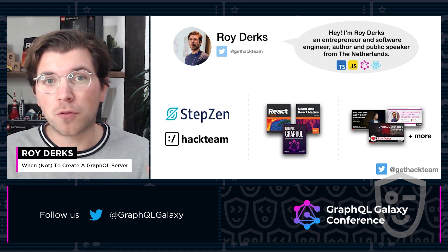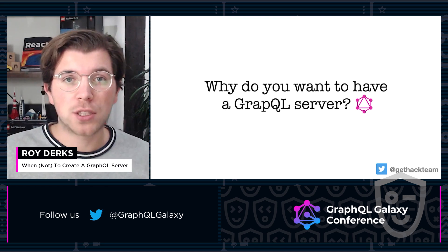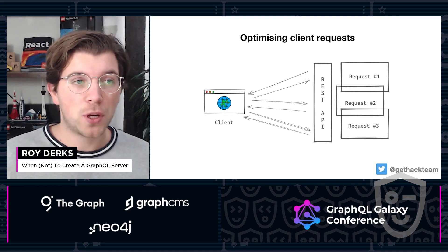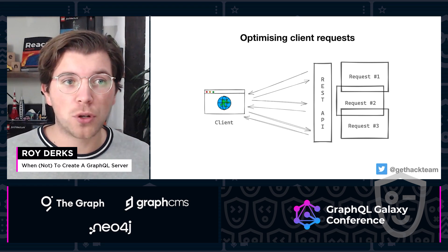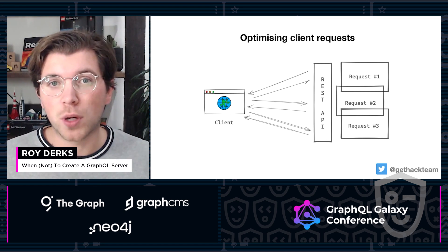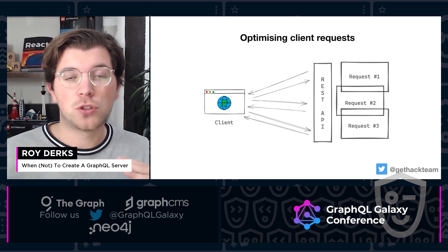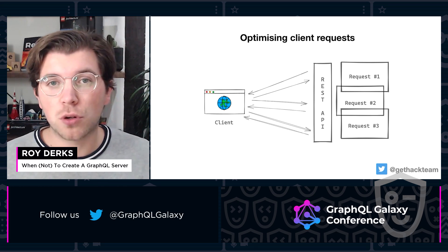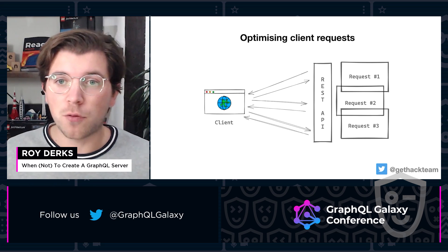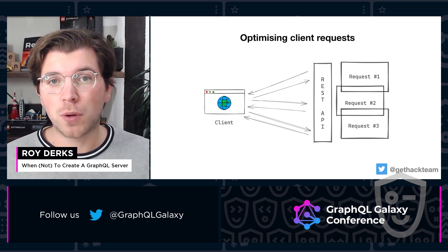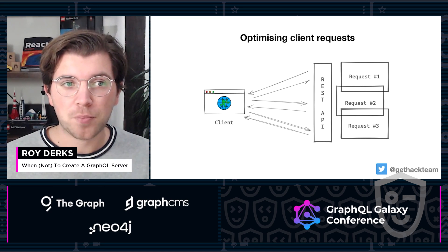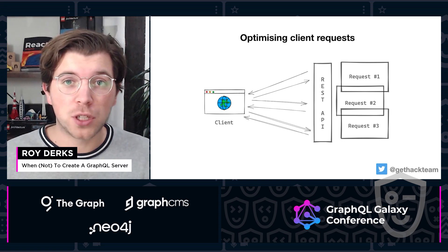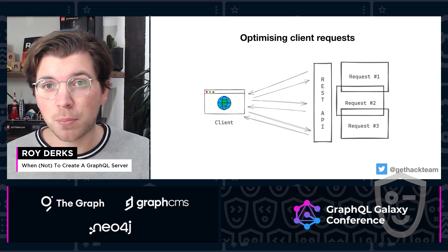Before diving into how to build a GraphQL server, let's have a look at why you want to build one in the first place. There are many reasons, and the very first one is to optimize a client request. You have a client consuming an API, but somehow your REST API or different API calls aren't that efficient. GraphQL isn't only there to solve the N+1 problem where you might be over- or under-fetching across too many REST endpoints.